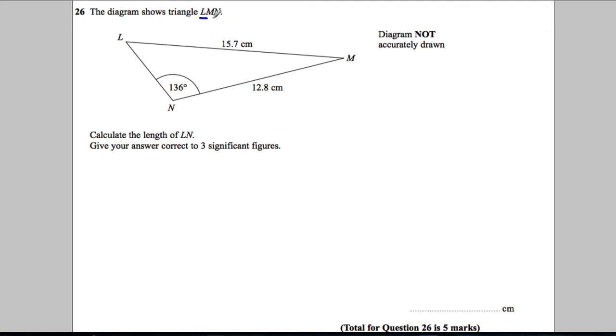The diagram shows a triangle LMN and we're asked to calculate the length of LN. Let's just highlight what we're asked to calculate - we're asked to calculate that length there and give our answer to three significant figures. Now let's just think what we've got - we have got an angle and the side opposite and we've got another side.